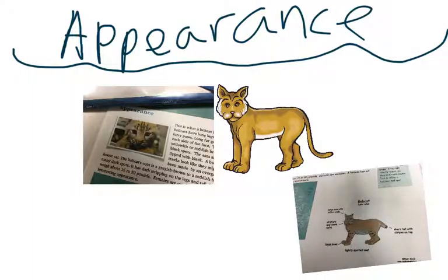A bobcat's coat is grayish brownish to reddish brownish. It can weigh about 16 to 30 pounds.